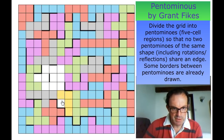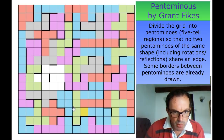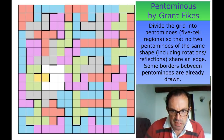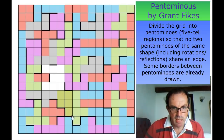Now this has to be a P pentomino — we've looked at the logic behind that many times — and we're left with the 10-cell region to finish the puzzle off. These have to be the same. We're going to have to make sure we don't attach a P to a P, so this square must not be part of a P pentomino.